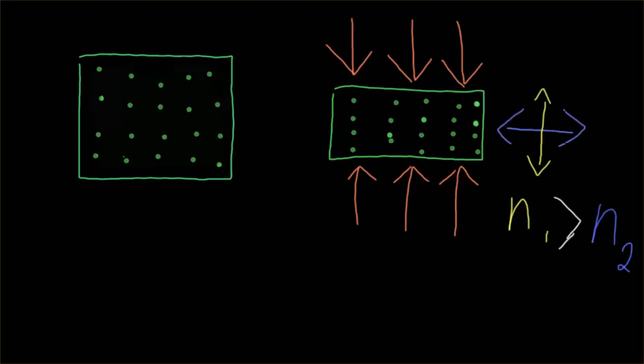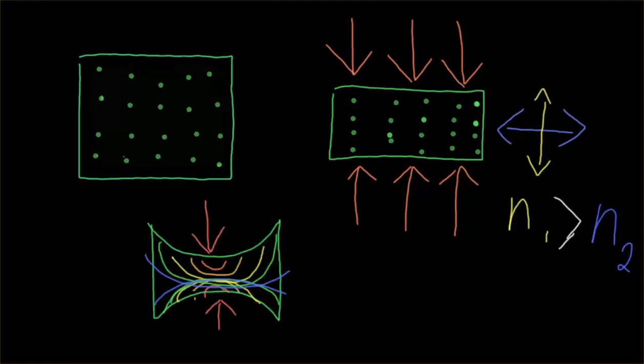And so what that does is it creates, again, two different indices of refraction based on the polarization. So the ones that are closer together here would have a larger index of refraction. Now, what this means is that depending on how much we stress our material, if we are stressing it within the setup that we previously described, we would change the color of the transmitted light.